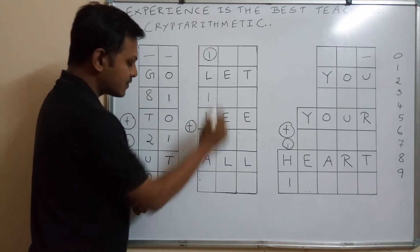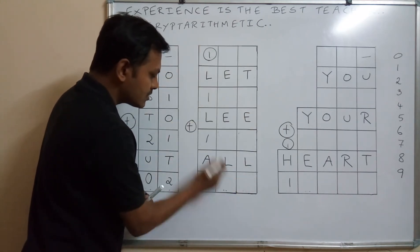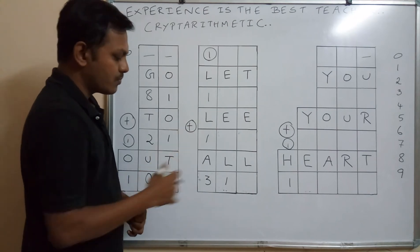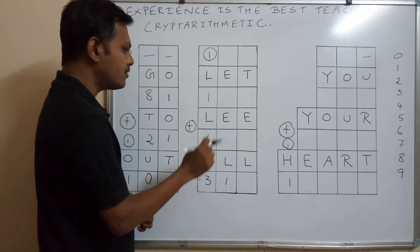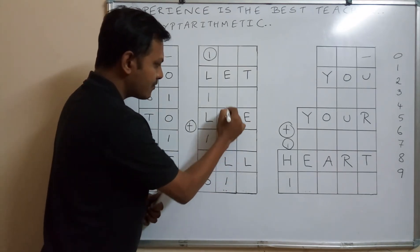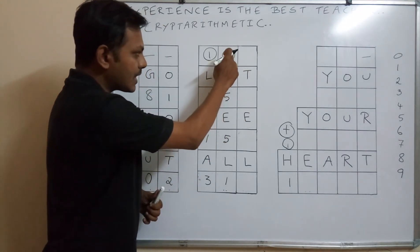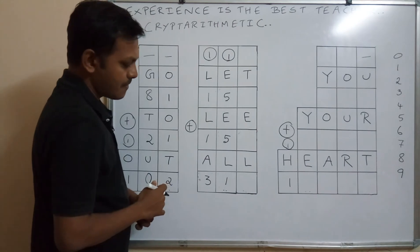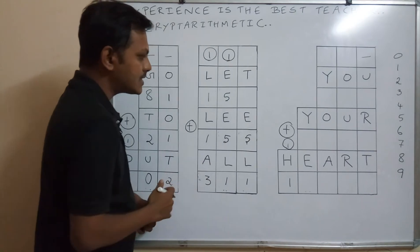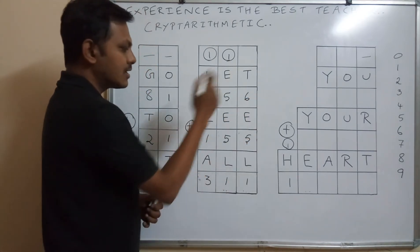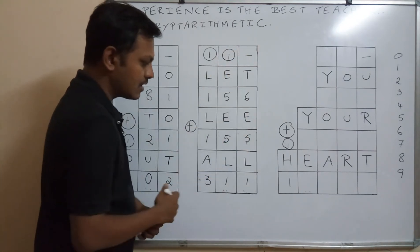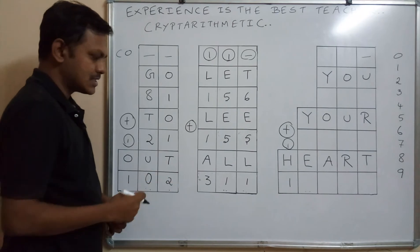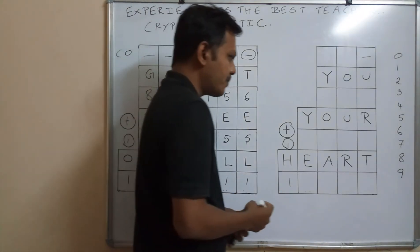With L = 1: 1 + 1 = 2, plus carry 1 = 3. The carry over comes from the previous column. E = 5: 5 + 5 = 10 plus carry 1 = 11, balance 1 written as carry. Then 5 + 6 = 11. The answer for LET + ALL is 156 + 155 = 311. Now moving to the problem YOU + YOUR = HARD: we write number 1 for H because 999 + 9999 gives a result starting with 1.